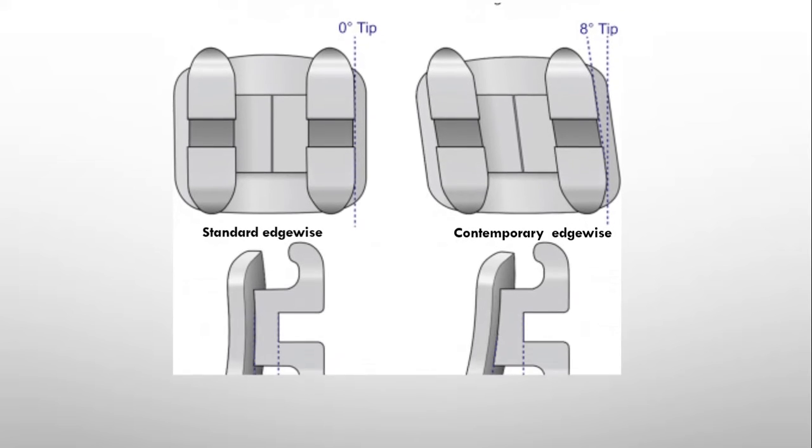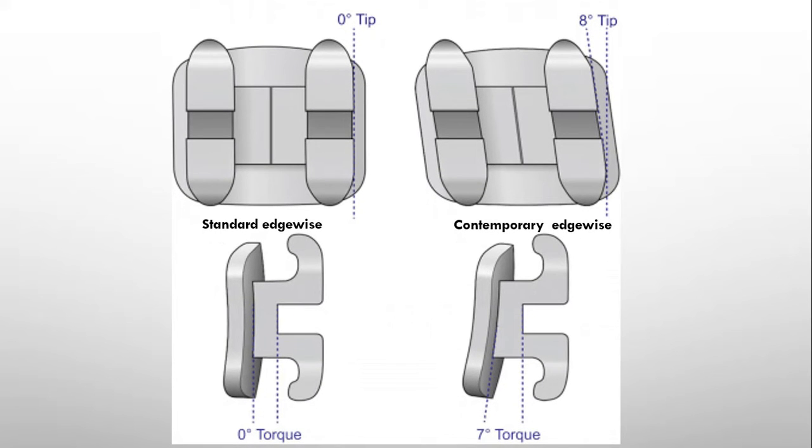If you see the profile view or the side view of the bracket, here you will appreciate that in standard edgewise, the width of the bracket base is uniform all over. However, the thickness of the bracket base varies in contemporary edgewise. And because of that, the contemporary edgewise bracket looks angulated even in its profile view, while standard edgewise looks straight. We will discuss that in more details in upcoming lectures.